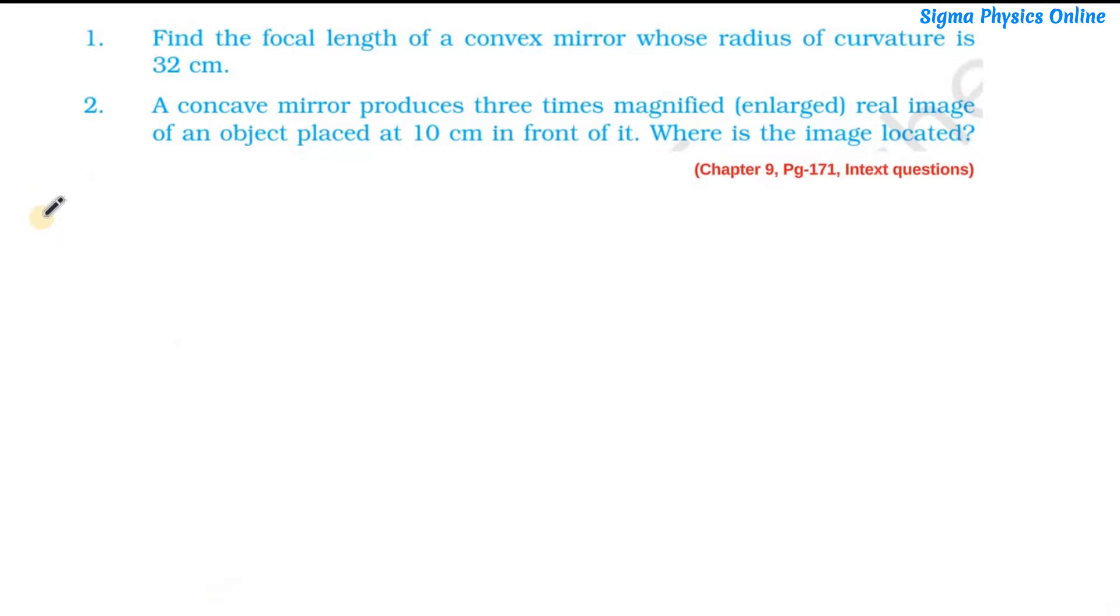The first question is: find the focal length of a convex mirror whose radius of curvature is 32 cm. So the radius of curvature is given as 32 cm. We have to find out the focal length of the convex mirror.